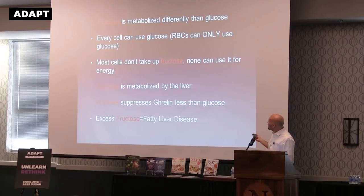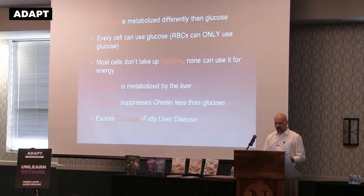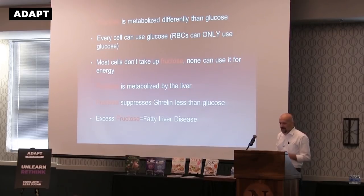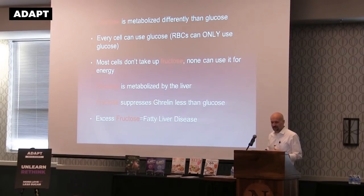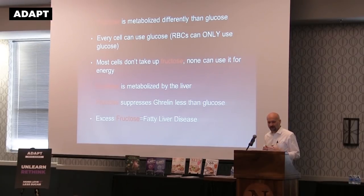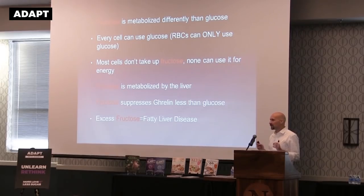High fructose corn syrup and fructose are special — not in a good way. They're different. Fructose gets metabolized differently than glucose. Every cell in your body can use glucose. Your red blood cells can only use glucose. Most other cells can use ketones, and some tissues may even prefer ketones, like the brain. But most cells don't take up fructose, and no cell can use it directly for energy.